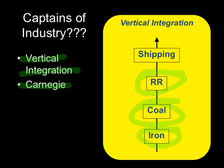When he becomes really successful, he starts selling his steel in Europe and overseas, so he buys himself some shipping companies. Now, that means that every step along the way, who is Carnegie paying? Who is he buying these things from? He's paying himself. He's buying them from himself.